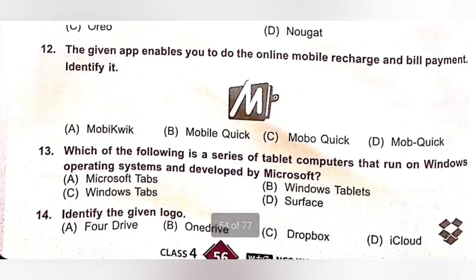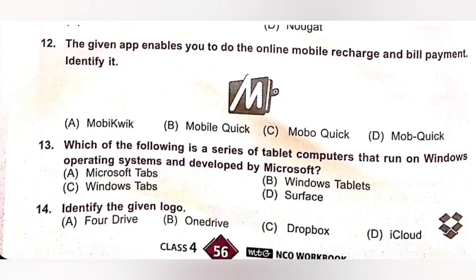Question 12: The given app enables you to do online mobile recharge and bill payment. Identify it. A. MobiQuick. B. MobileQuick. C. MobiQuick. D. MobQuick. MobiQuick is an Indian company offering a mobile phone-based payment system. Option A is the correct answer.